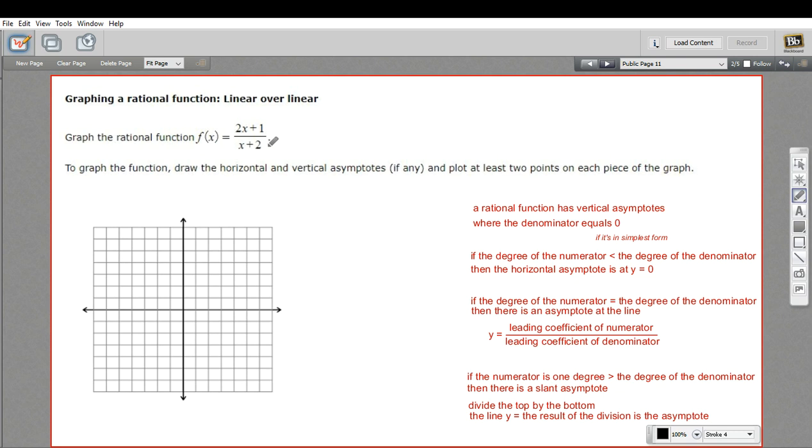In this problem, we're being asked to graph this rational function, 2x plus 1 over x plus 2. The main steps for graphing a rational function are to plot the asymptotes first, and then test out some points and see if you can figure out the graph from there. So let's look at the asymptotes.